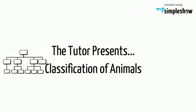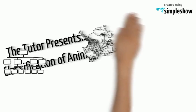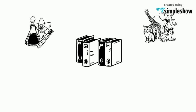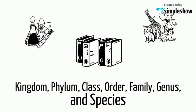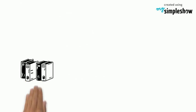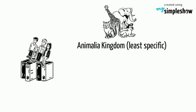The tutor presents classification of animals in science. We classify animals using these ranks from least specific to most: kingdom, phylum, class, order, family, genus, and species. Let's try to classify humans. All animals share the kingdom of Animalia.